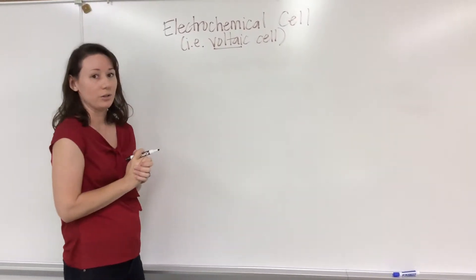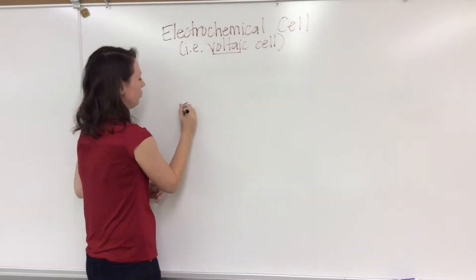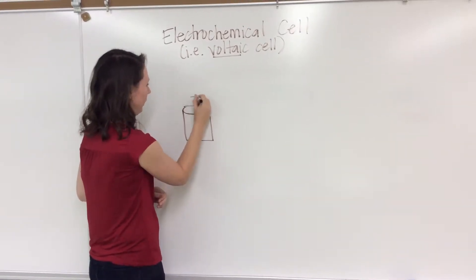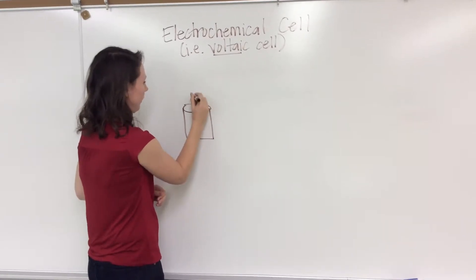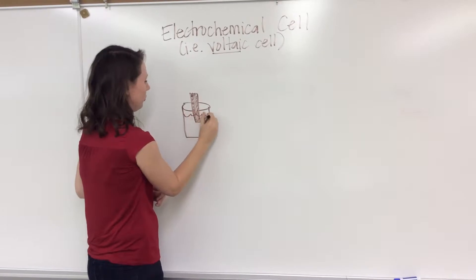One of the things I will ask you to do is draw an electrochemical cell. Let's go through the process of sketching that. Here's beaker number one. We've got a strip of metal in there, and I'll let you choose which metals you use.